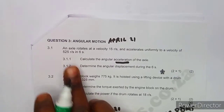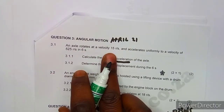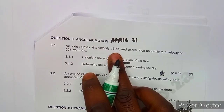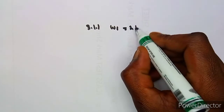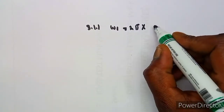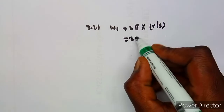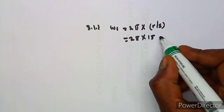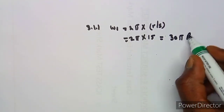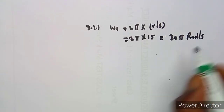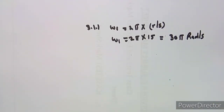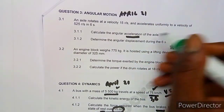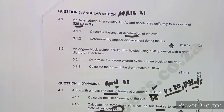We have the initial angular velocity ω₁. It's already in revs per second, so it's just going to be 2π times the revs per second given. So ω₁ = 2π × 15 = 30π, which is in rad/s. Remember, angular velocity is measured in rad per second.